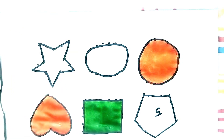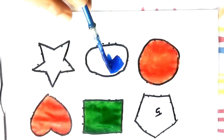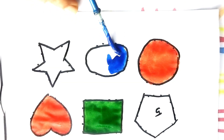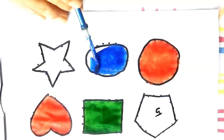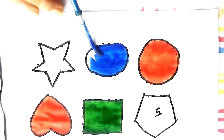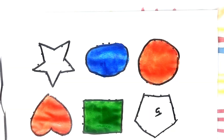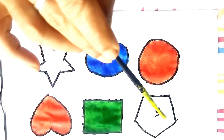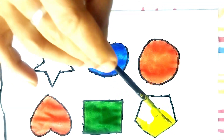This is blue color — blue color oval, oval is blue color. This is yellow color, yellow color.